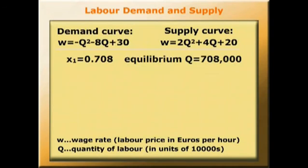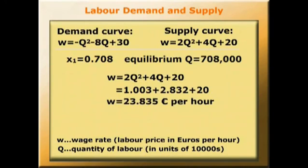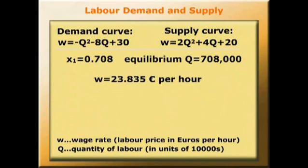Now we've found the equilibrium quantity of labour in the market, we can find the equilibrium price of labour services. To find the wage rate, we substitute into one of our equations — we'll use the supply curve. W = 2q² + 4q + 20 = 1.003 + 2.832 + 20 = 23.835 euros per hour. This is the equilibrium wage rate for this kind of employee. So in markets with non-linear equations, whether in labour markets or goods markets, we can still solve for price and quantity with an understanding of quadratic equations.